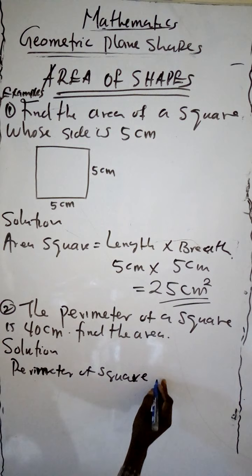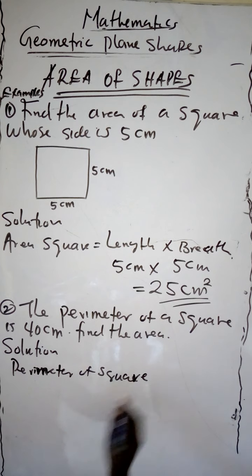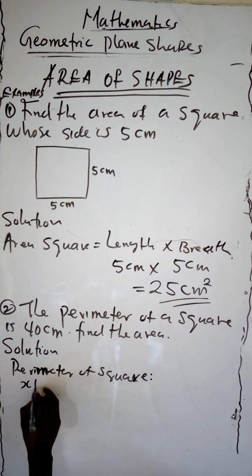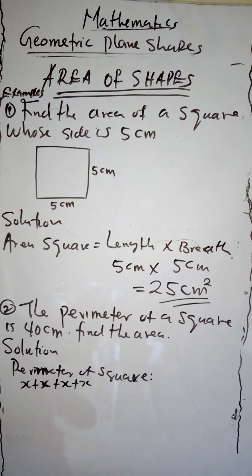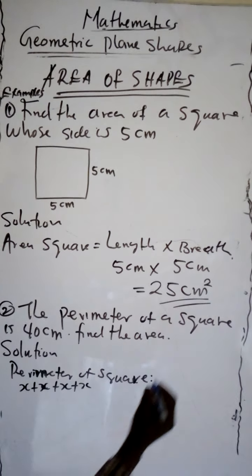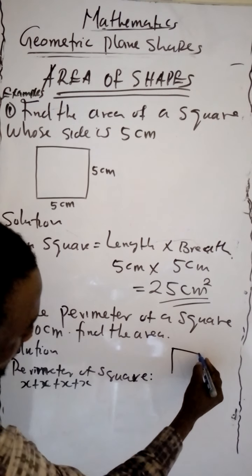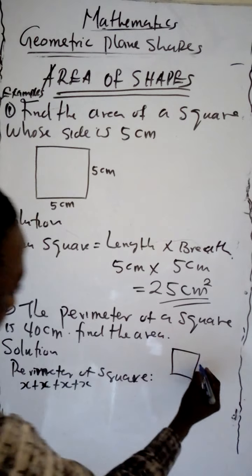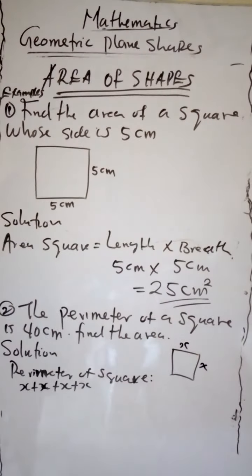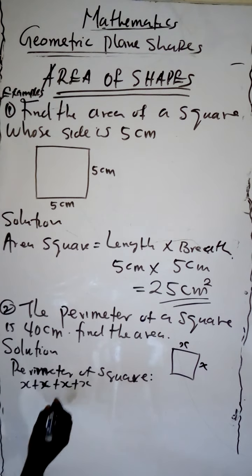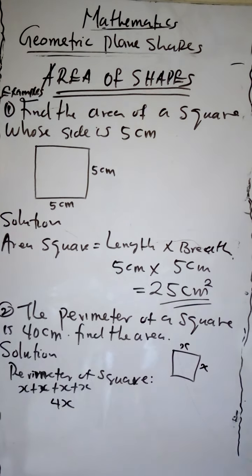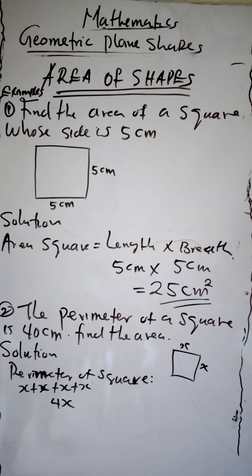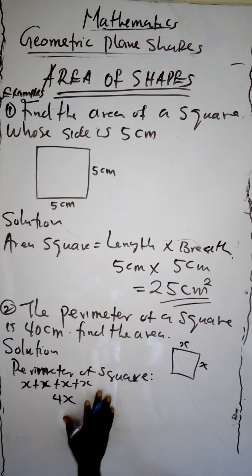Let's use x. To calculate the perimeter of a square, it will be x plus x plus x plus x. We put x on each side. When we add all of them together, the perimeter will be 4x. So 4x is the formula to calculate for perimeter.